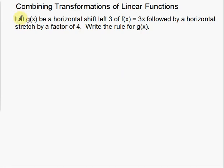So reading the directions here: let g of x be a horizontal shift left 3 of f of x equals 3x, followed by a horizontal stretch by a factor of 4. Write the rule for g of x. As I said before, you just need to take it one step at a time, do one transformation at a time.